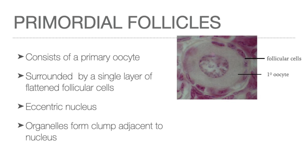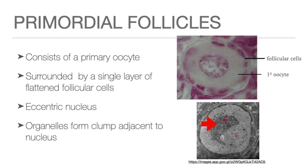The primordial follicles are the only follicles present at birth. Each consists of a primary oocyte surrounded by a single layer of flattened follicular cells. The nucleus of the oocyte has a prominent nucleolus. Occasionally, the nucleus is not centrally located, which we describe as eccentric in location. Note also that the organelles of the primary oocyte in primordial follicles are clumped in one area adjacent to the nucleus.